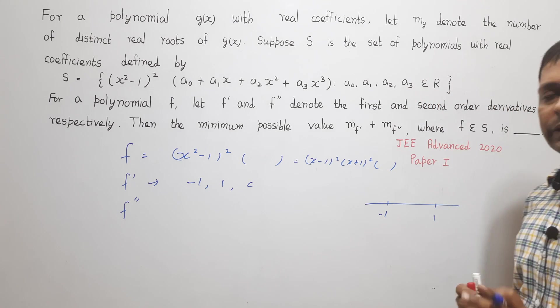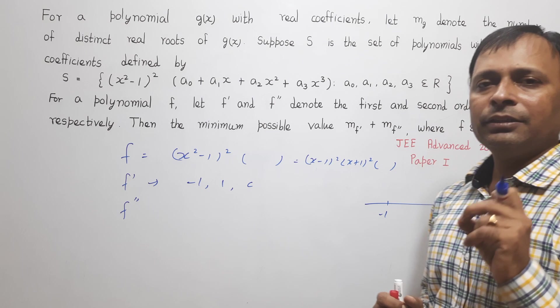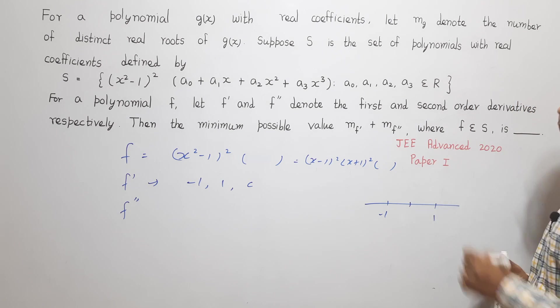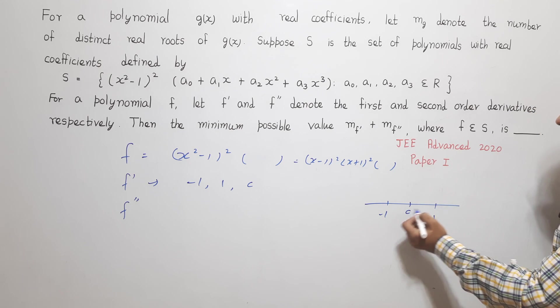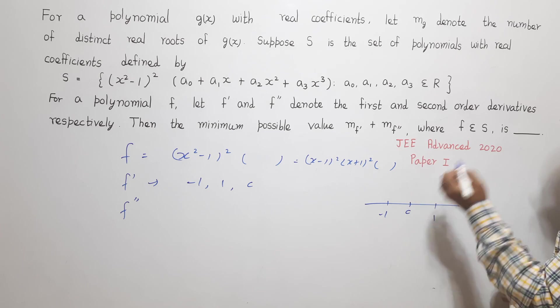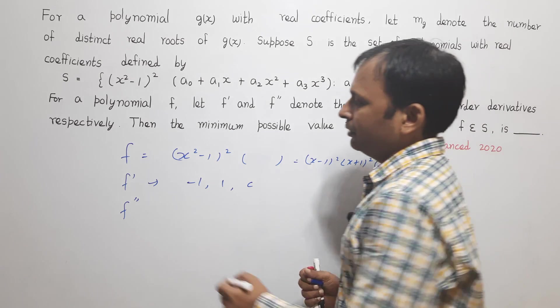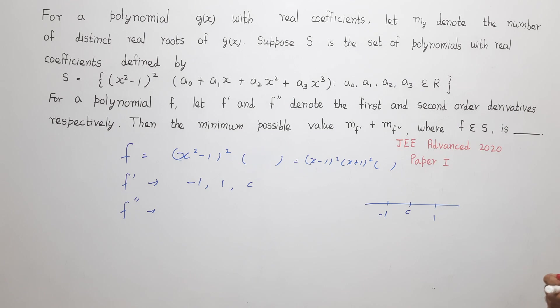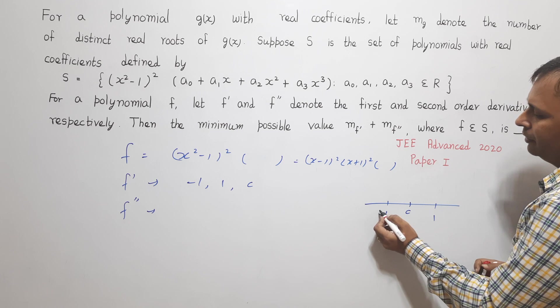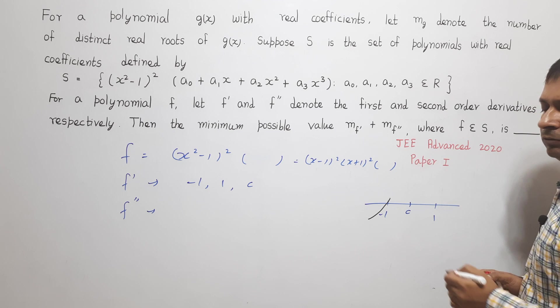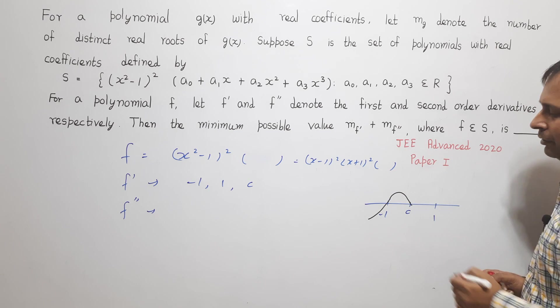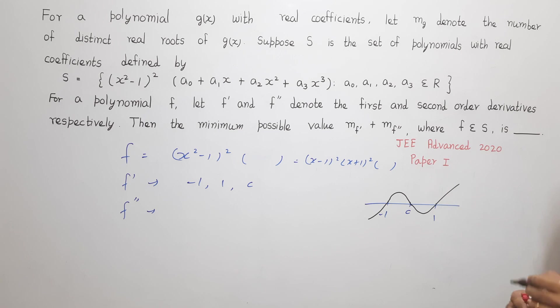So now we compulsorily have minimum 3 roots, minimum 3 roots of the function f'. Say the third root is equal to C. So we have three roots of f'(x) which is -1, 1, and C. Now coming on to f'(x), if I draw the graph of f' it may look something of this sort. It will have for f', if I am saying it will have 1 root at x = -1, 1 root at x = C and 1 root at x = 1. That means we will have minimum 3 roots which I have indicated here.